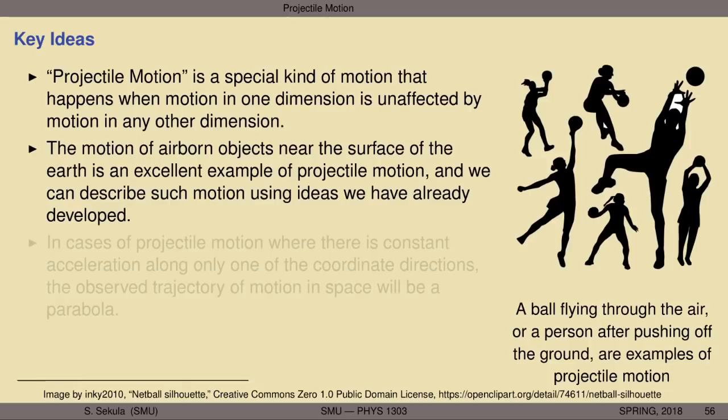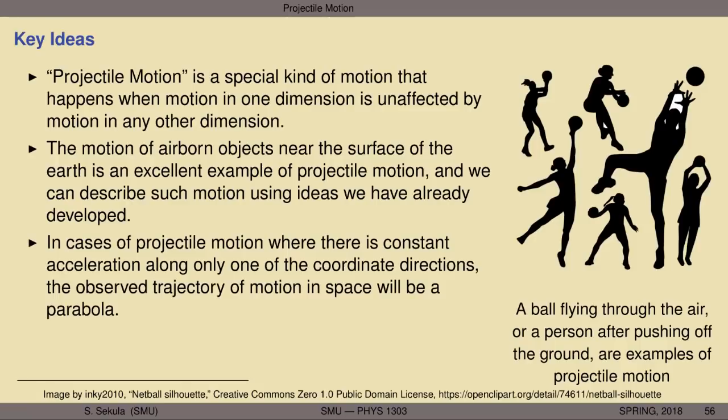The motion of airborne objects near the surface of the earth is an excellent example of projectile motion. We can describe that kind of motion using the ideas we have already developed. In cases of projectile motion where there is constant acceleration along only one of the coordinate directions, the observed trajectory in space will be a parabola. These are the ideas that we will develop more fully in this lecture.